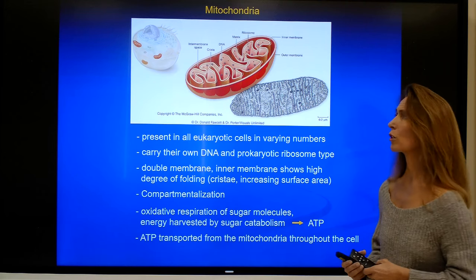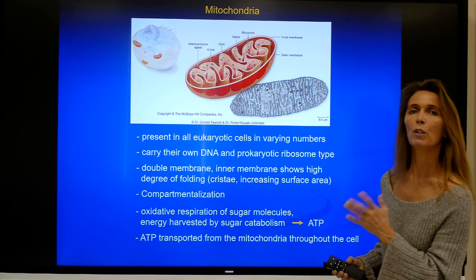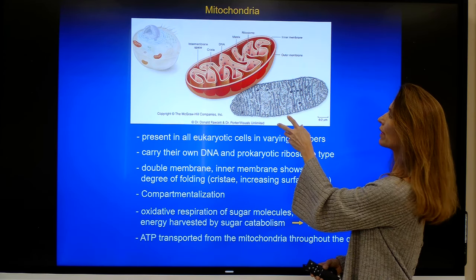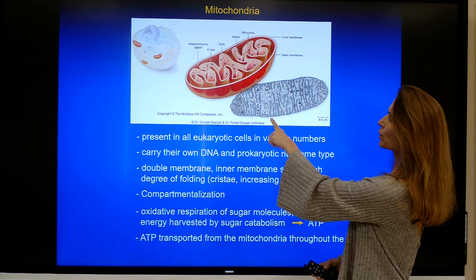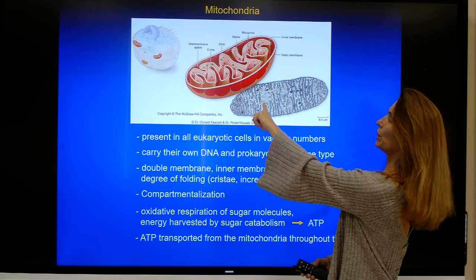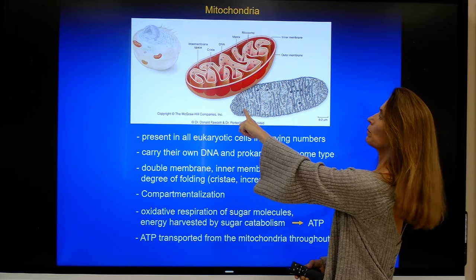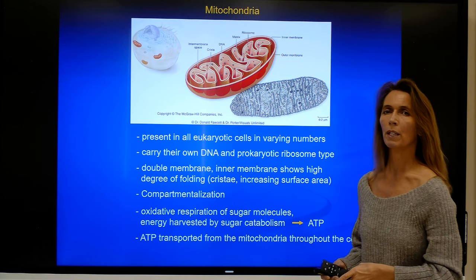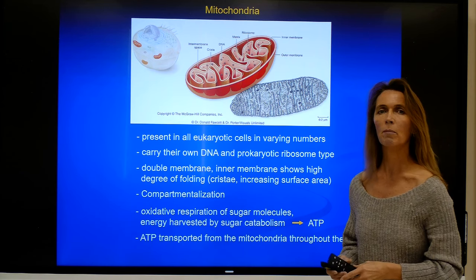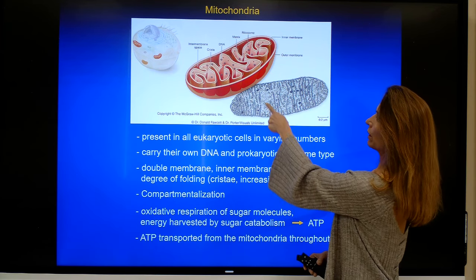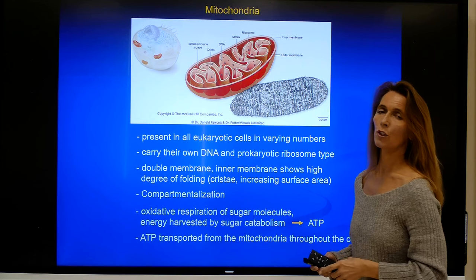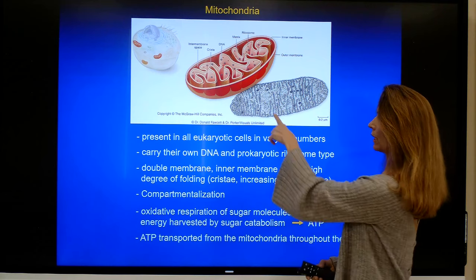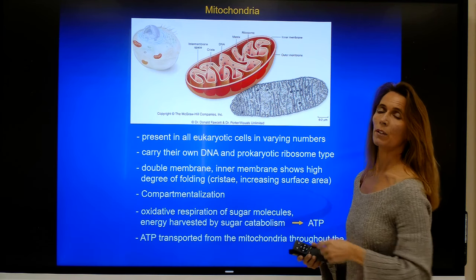Here you can see the electron microscopic structure of a mitochondrion. There is a network of internal membranes and an external membrane. Mitochondria consist of two membranes: the outer membrane and the inner membrane. The surface area of the inner membrane is quite large, and this is where ATP is produced, on this inner membrane.